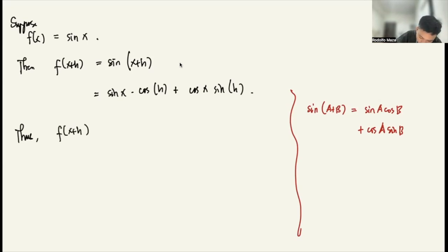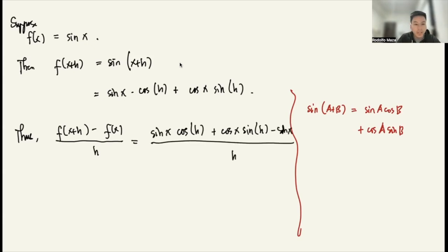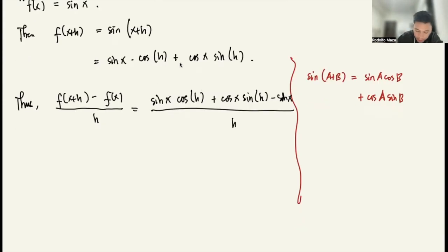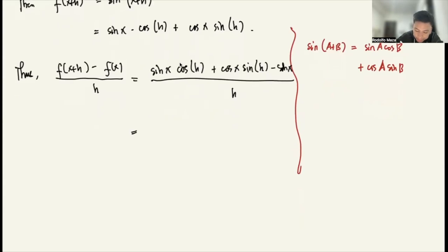Thus, f(x+h) minus f(x) all over h becomes: sine x times cosine h plus cosine x sine h minus sine x, all over h. We can rearrange this expression. I will get cosine x times sine h over h plus...